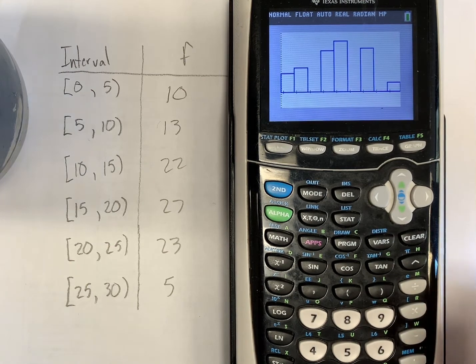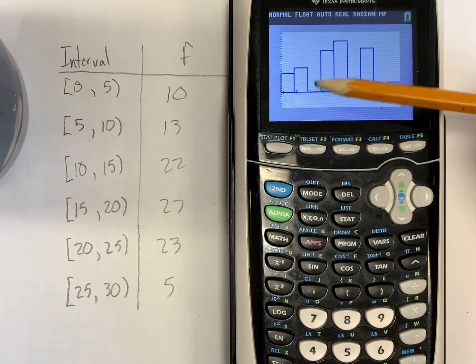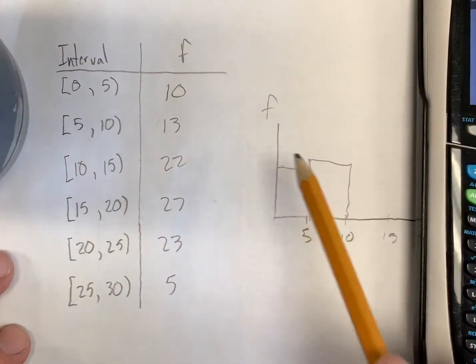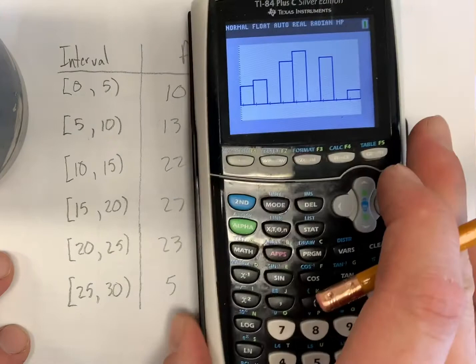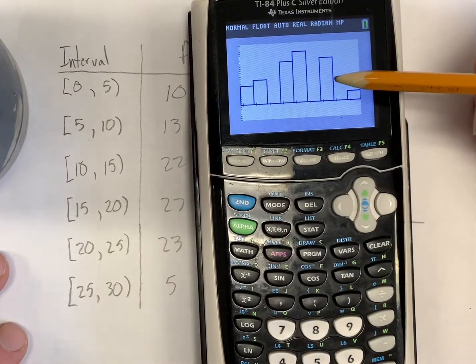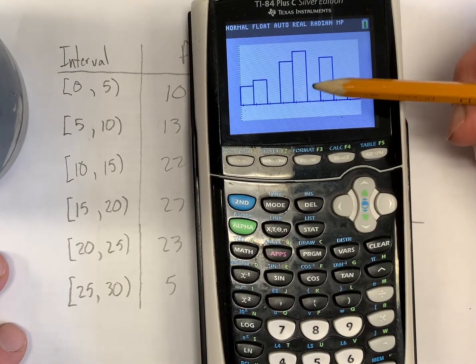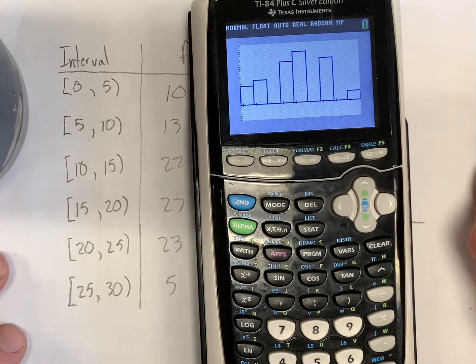When I do zoom 9, you'll see that we have what looks like the start of my histogram as I had had before here. But then we have this gap and these gaps are a direct result of an issue with our window.